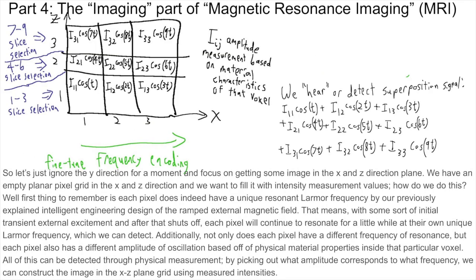So let's just ignore the Y direction for a moment and focus on getting some image in the X and Z direction plane. We have an empty planar pixel grid in the X and Z direction, and we want to fill it with intensity measurement values. Each pixel does indeed have a unique resonant Larmor frequency by our previously explained intelligent engineering design of the ramped external magnetic field. That means with some sort of initial transient external excitation, and after that shuts off, each pixel will continue to resonate for a little while at their own unique Larmor frequency, which we can detect. Additionally, not only does each pixel have a different frequency of resonance, but each pixel also has a different amplitude of oscillation based off of physical material properties inside that particular voxel. By picking out what amplitude corresponds to what frequency, we can construct the image in the X-Z plane grid using measured intensities.